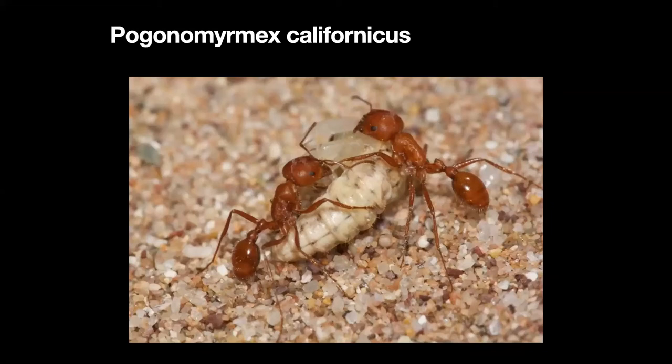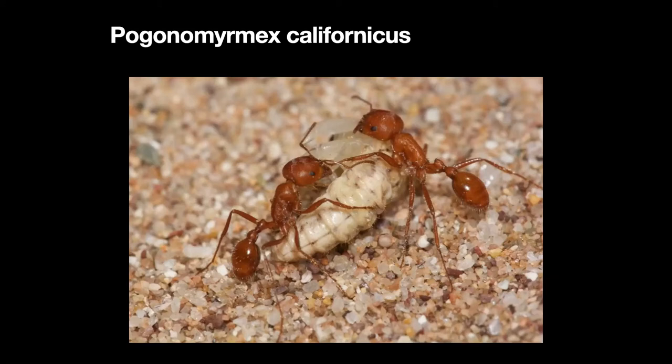Here's Pogonomyrmex californicus — two different ants from the same nest. One thought it was going to help the other one, and the other one swatted it in the face, just like a little kid. It takes off and runs back to the nest while the other picks up an immature tiger beetle — larval or pupal stage — and minds its own business.